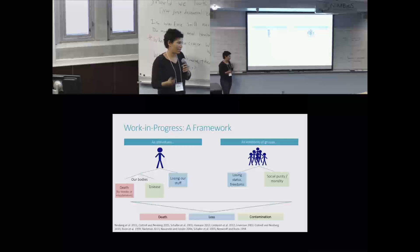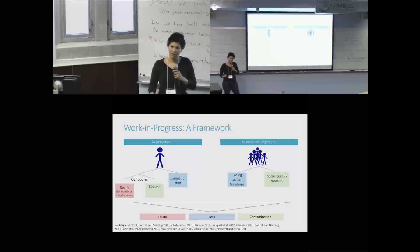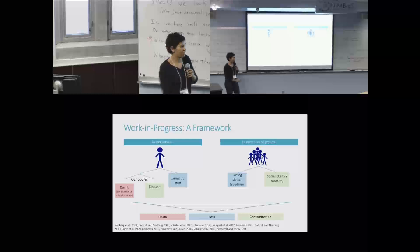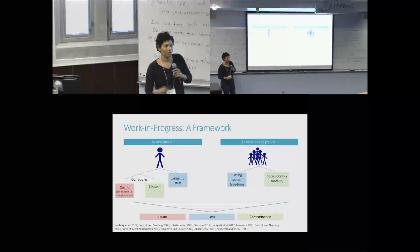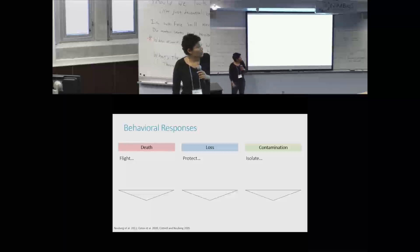And these are, I'm highlighting three systems here, three types of threats: death, loss, and contamination. And there's an affective response that goes with this. Death, actually fear. Loss, anger. Contamination, disgust. I'm happy to talk about that a little bit later, but not in this five minutes.